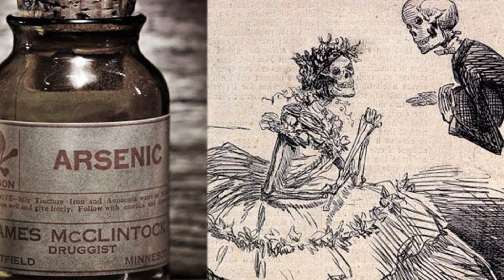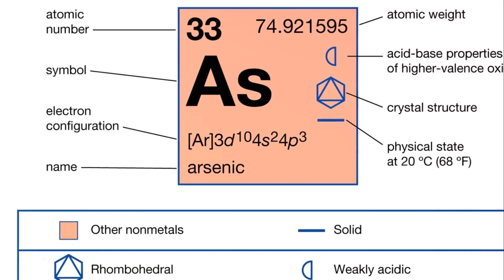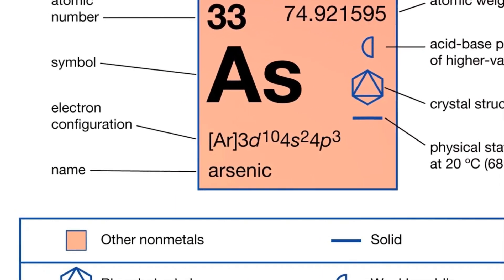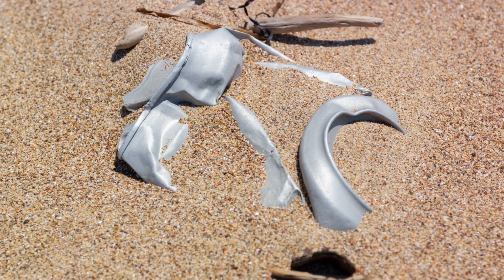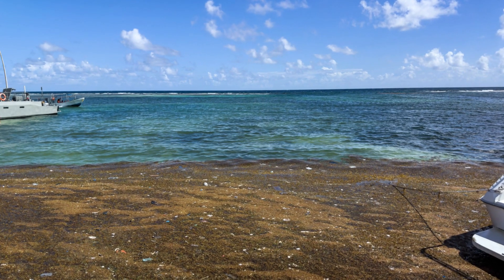Arsenic was commonly used in the 19th century for a variety of purposes, from pest control to cosmetic products. Could these elevated levels be the result of environmental exposure rather than a malicious act?